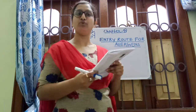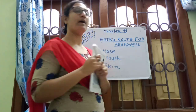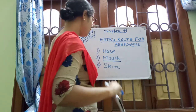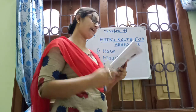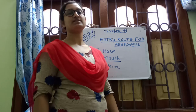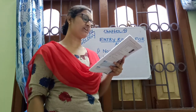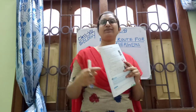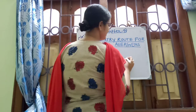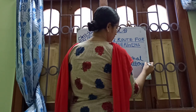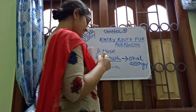The second entry route is the mouth. Allergens enter our body through food via the mouth, causing symptoms like itching and swelling of the tongue, lips, and throat. These symptoms together are grouped in a category called oral allergy.